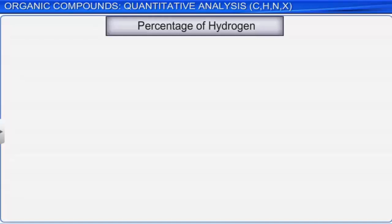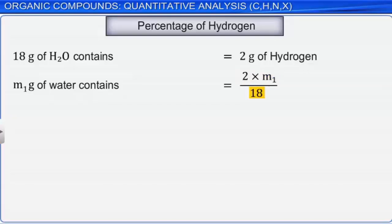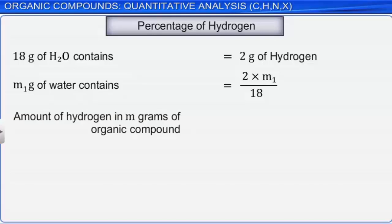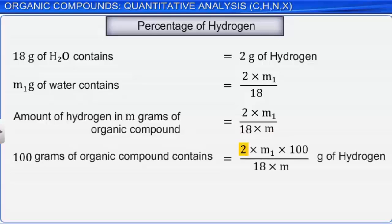The percentage of hydrogen is calculated similarly. We know that 18 grams of water contains 2 grams of hydrogen. Therefore, M1 grams of water contain (2 × M1) / 18 grams of hydrogen. Hence, M grams of organic compound contain (2 × M1) / (18 × M) grams of hydrogen. Therefore, the percentage of hydrogen is (2 × M1 × 100) / (18 × M).